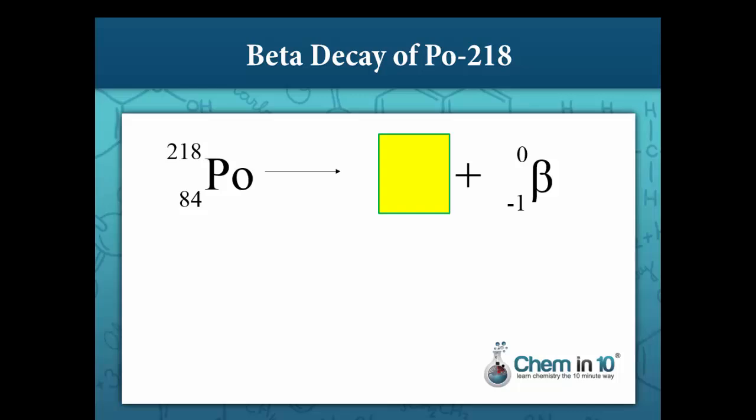The sum of mass numbers on the right-hand side must equal the mass number on the left-hand side, and likewise for atomic numbers. In the beta decay of polonium-218: since the mass number doesn't change, the mass number of our new nuclide is still 218. Since the atomic number increases by 1, the atomic number of our new nuclide is 85. Notice how 218 plus 0 equals 218, and 85 plus negative 1 equals 84, the atomic number of polonium. The identity of our new nuclide is astatine-218.